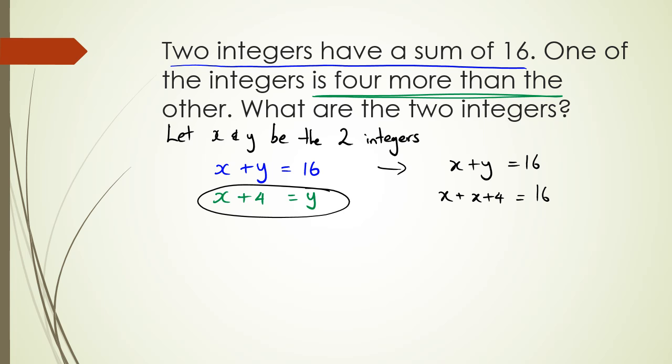Can you see how I got y equals x plus four? Because that's from the green area that I had written. So now combining the like terms, I've got 2x plus four equals 16. And then 2x is equal to 16 minus four. So 2x is equal to 12. x is equal to 12 divided by two. Therefore, x is equal to six.